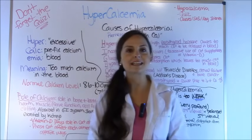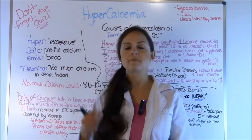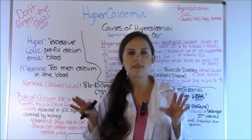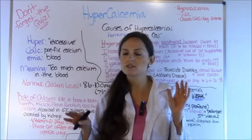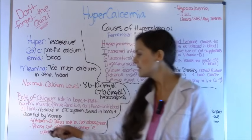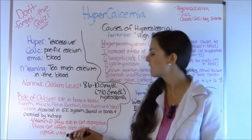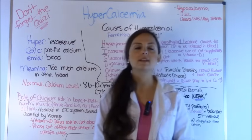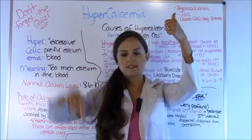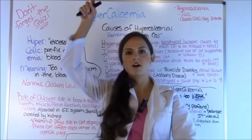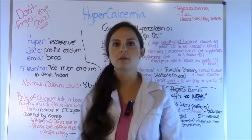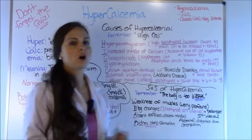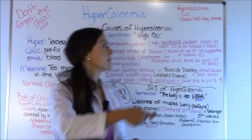I like to think of phosphorus and calcium as sisters who compete in everything and don't like each other — they do the opposite. So phosphorus and calcium affect each other in opposite ways: if phosphorus goes up, calcium goes down; if calcium goes up, phosphorus goes down. Remember that — it's very important and will make sense why we have certain causes of hypercalcemia.